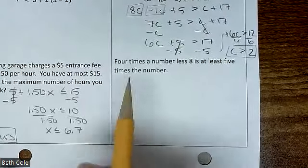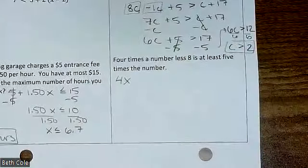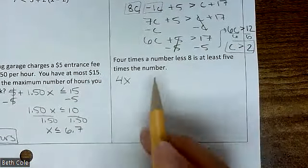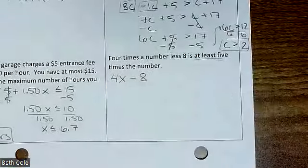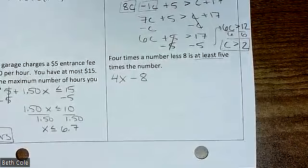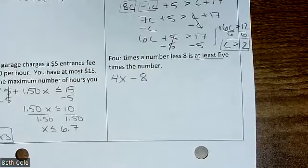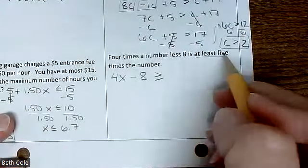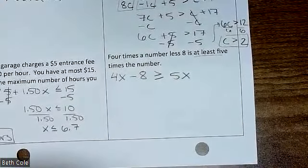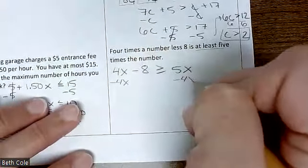Okay, now let's set this one up. Four times the number — how would you write that? 4x. Less eight — that would mean minus 8. 'Is at least' — if I told you you have to be at least this tall to get on the ride, you have to be that much or more. If you need at least $20 to get in somewhere, you need $20 or more. So what symbol is going to go there? Greater than or equal to. Five times the number: 5x.